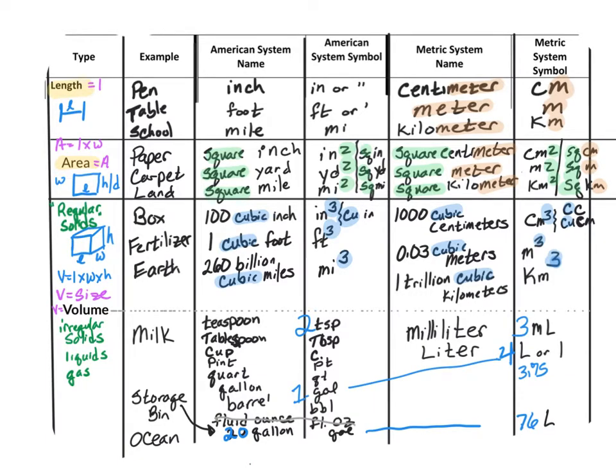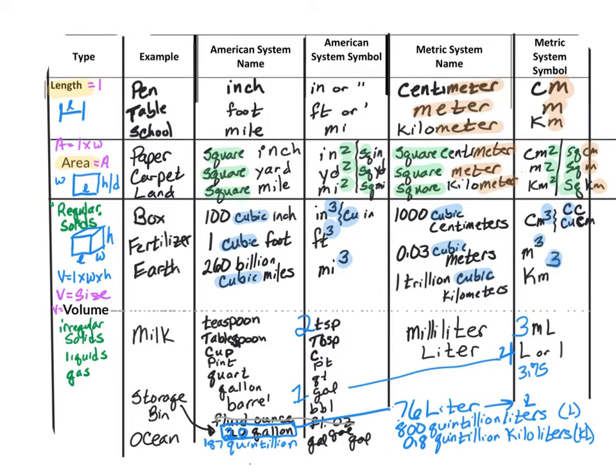There are about 187 quintillion gallons of water in the Pacific Ocean. Again, that's quintillion. In the metric system, that's approximately 800 quintillion liters of water or 0.8 quintillion kiloliters of water. You may have noticed that in the metric system, when we measure liquids, they're measured in some form of the liter. And the liter is our base unit.